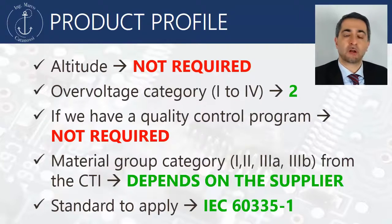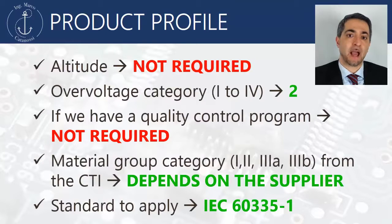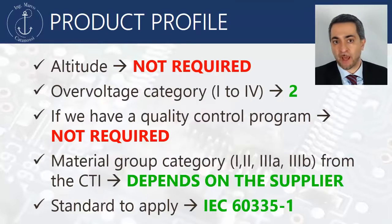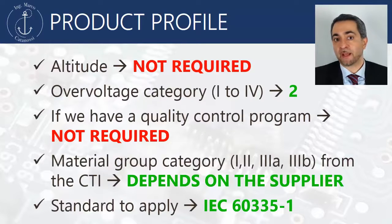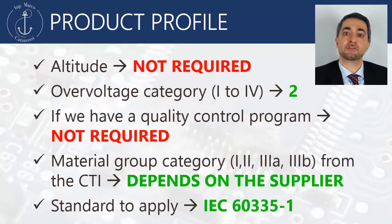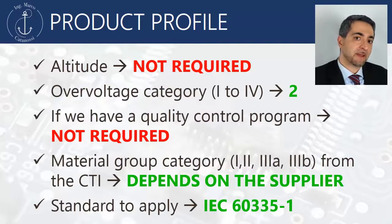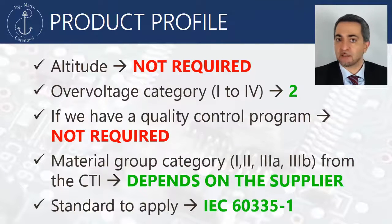We will calculate the material group category from the CTI provided by the PCB supplier. As we know from the clearance lesson, and also in the later section, the proper standard to apply is IEC 60335-1.